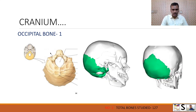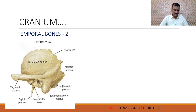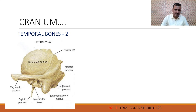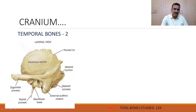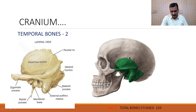Now we come to another bone, that is the temporal bone. Temporal bones are two in number and they are on the sides of the head — one is left, one is right. An important feature is that there is an external auditory meatus for the ear canal. The internal ear lies inside this bone and the outer ear is on both sides of the head. This bone is just below the parietal bone. Two temporal bones are there.